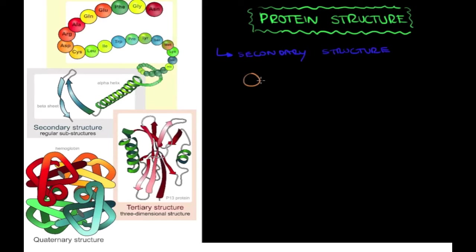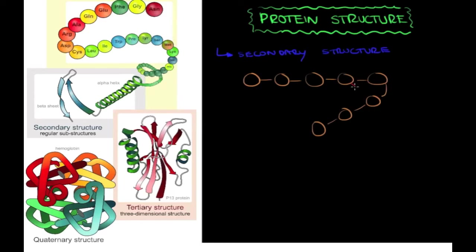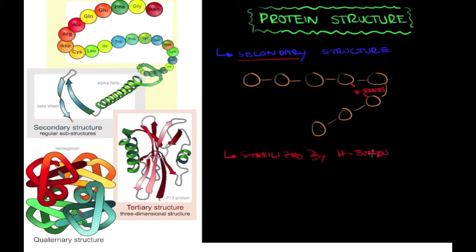The secondary structure is when you have your primary structure starting to fold or bend. These amino acids are going to interact with each other and form hydrogen bonds, and this is how you end up with a secondary structure. These secondary structures are stabilized by hydrogen bonds.